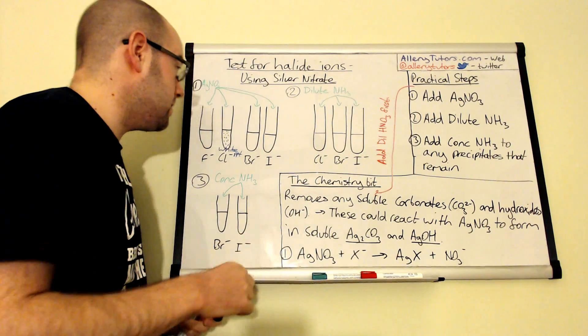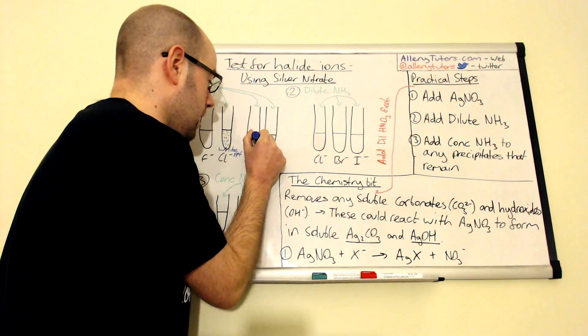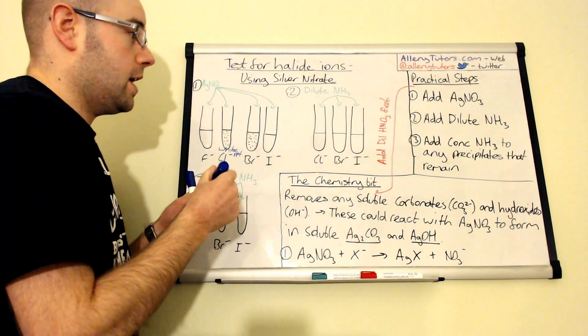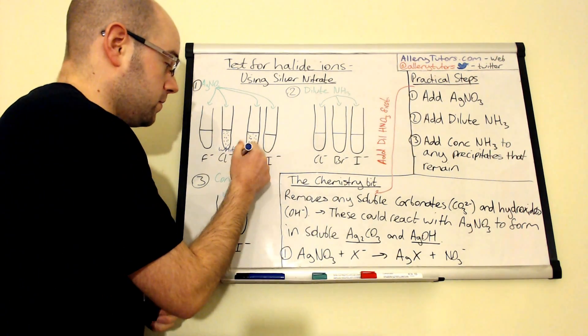If we do it with bromine, again, we add silver nitrate to it. We get a precipitate that's been formed. We know, providing we've added our nitric acid first, we know that that precipitate is only because of the halide ion.